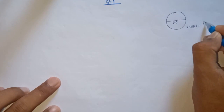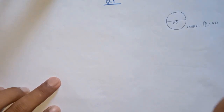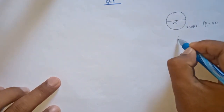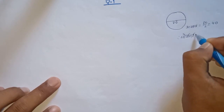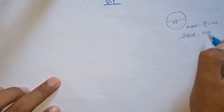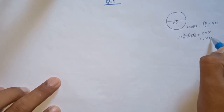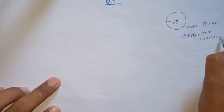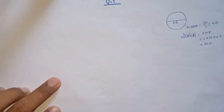20 into 20 into 2 equals 40. Therefore, circumference equals 2πr. So 2 into π, and π times 40 gives us 80π.